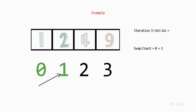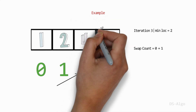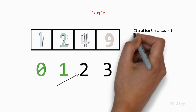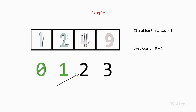Let's begin with the third iteration, which starts from index 2. Therefore, we assign minLoc to 2. Now compare the element at index 2 with the next element. The element at index 3 is not less than the element at index 2 — that is, 9 is not less than 4 — so no need to update minLoc. The third iteration is complete and we have not found a new minLoc, as it remains the same as its initial value of 2. There is no need to swap or increase the swap count. There is also no need to iterate the last element at index 3, as per the algorithm rule. Therefore, the minimum swaps required to sort this array is 1.